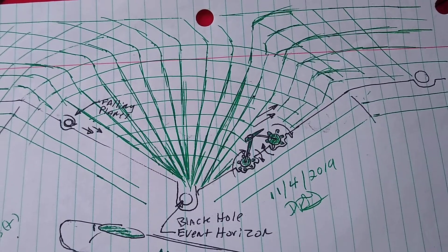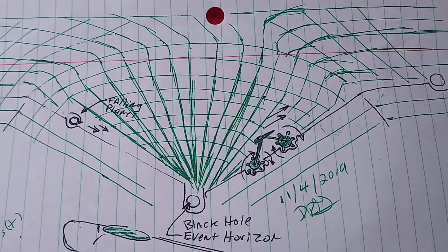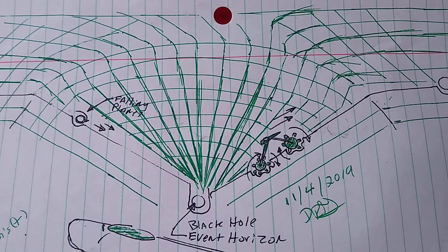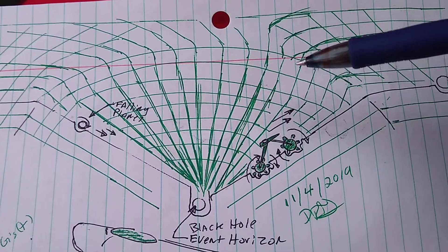Okay, we know that a black hole actually curves time and space, the fabric itself of time and space. This is the fabric of time and space.